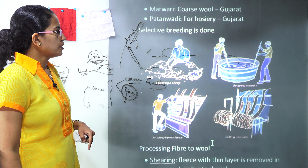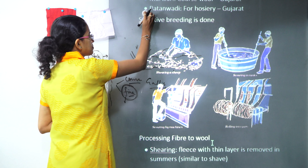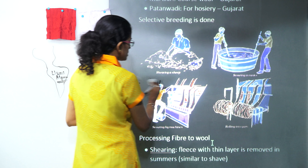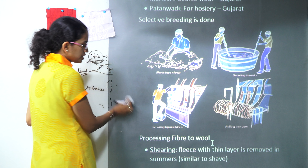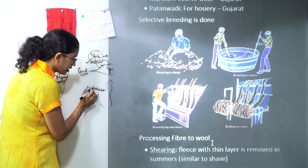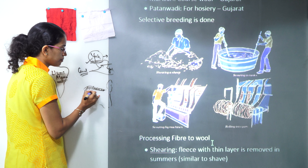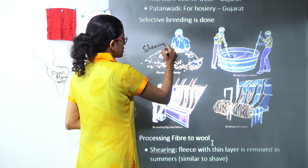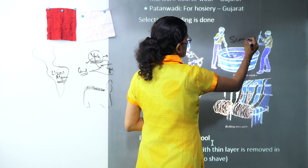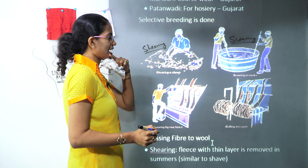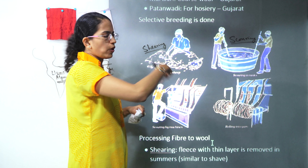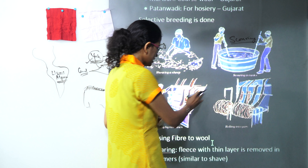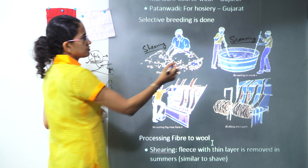Now coming to how the process of rearing and creating woolen shawls or sweaters is done. The first process is shearing — the hairs of the sheep are removed by shaving, and that process is known as shearing. After shearing, you have a process of scouring. This process can be manual or by machines: the hairs are boiled to remove all dirt and sticky material, and finally clean hair comes out.